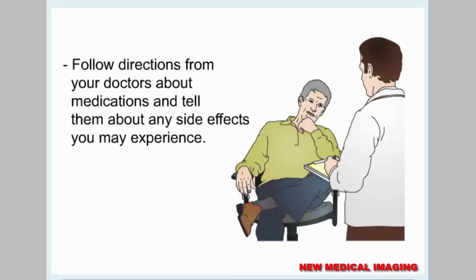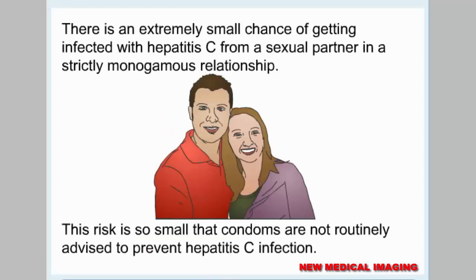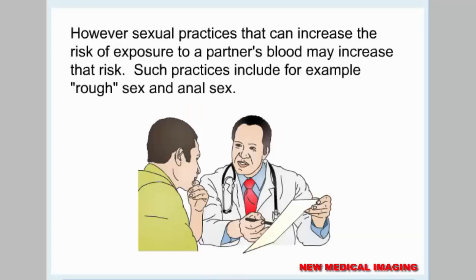Follow directions from your doctor about medications and tell them about any side effects you may experience. Women with hepatitis C should discuss pregnancy with a doctor before getting pregnant. There is an extremely small chance of getting infected with hepatitis C from a sexual partner in a strictly monogamous relationship. This risk is so small that condoms are not routinely advised to prevent hepatitis C infection. However, sexual practices that can increase the risk of exposure to a partner's blood may increase that risk — such practices include, for example, rough sex and anal sex.